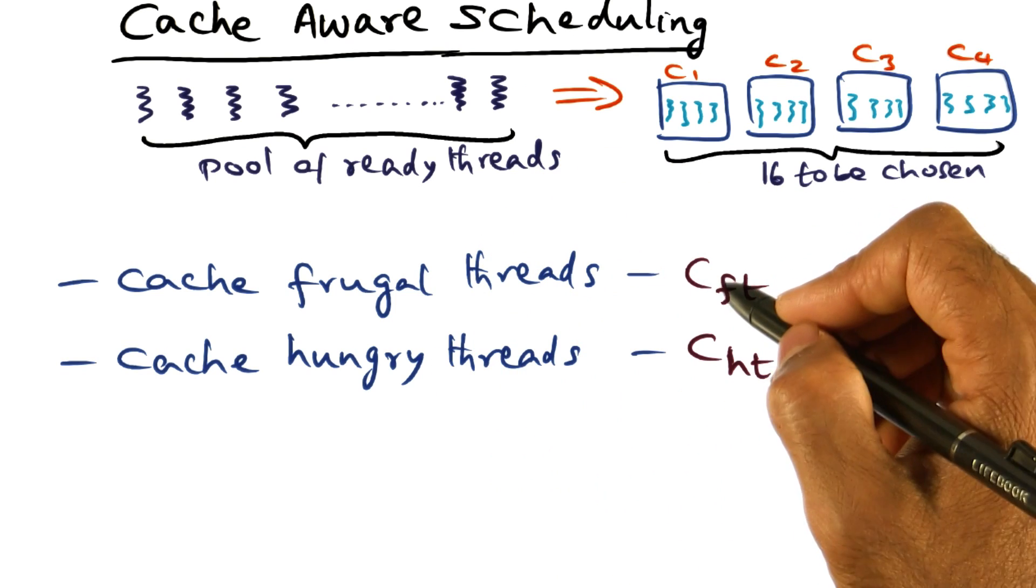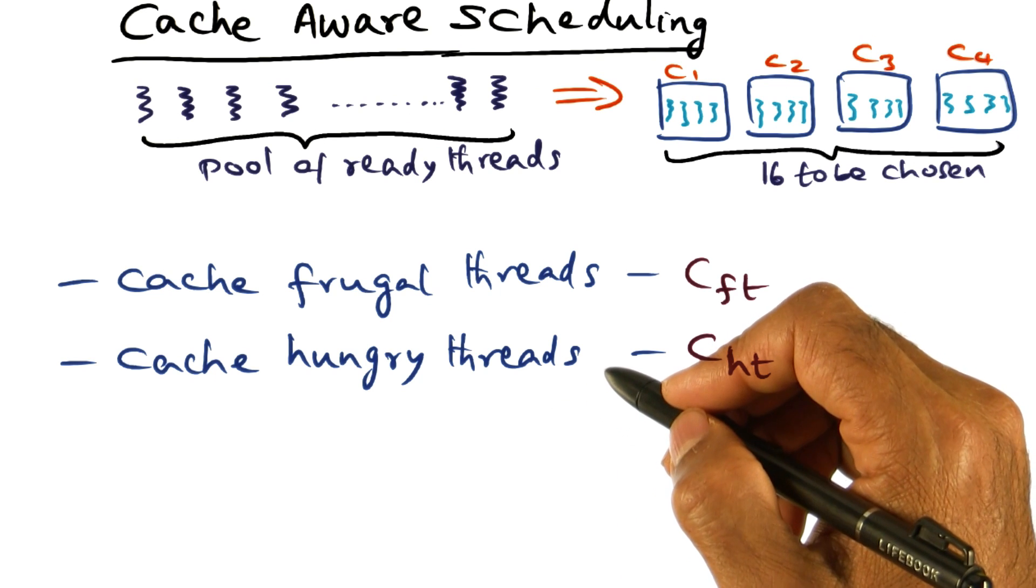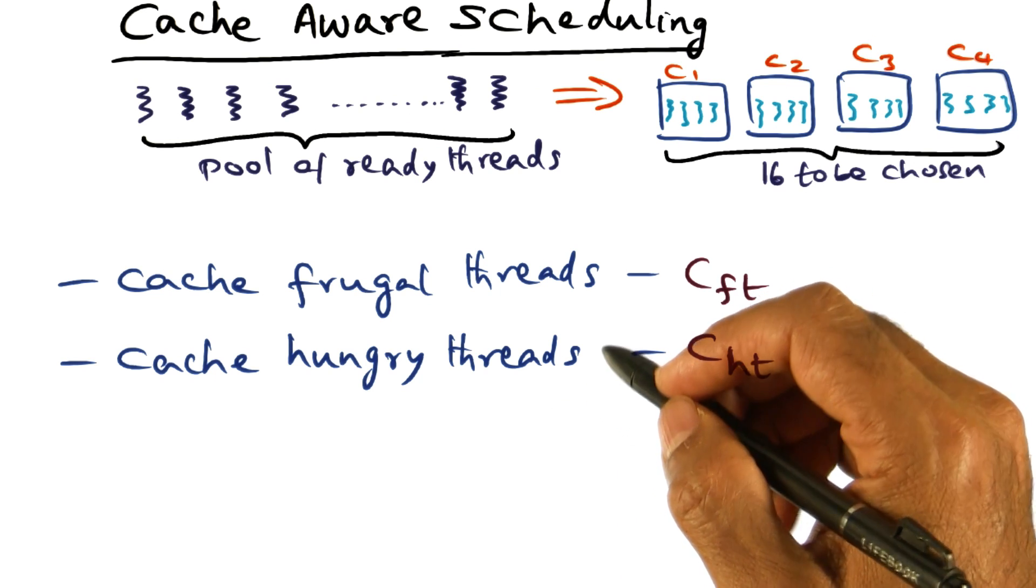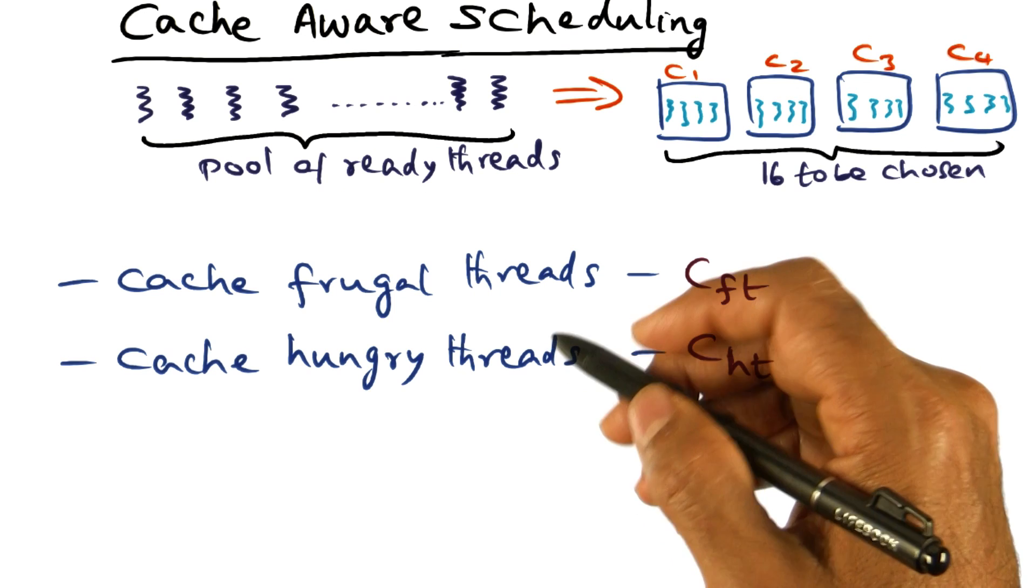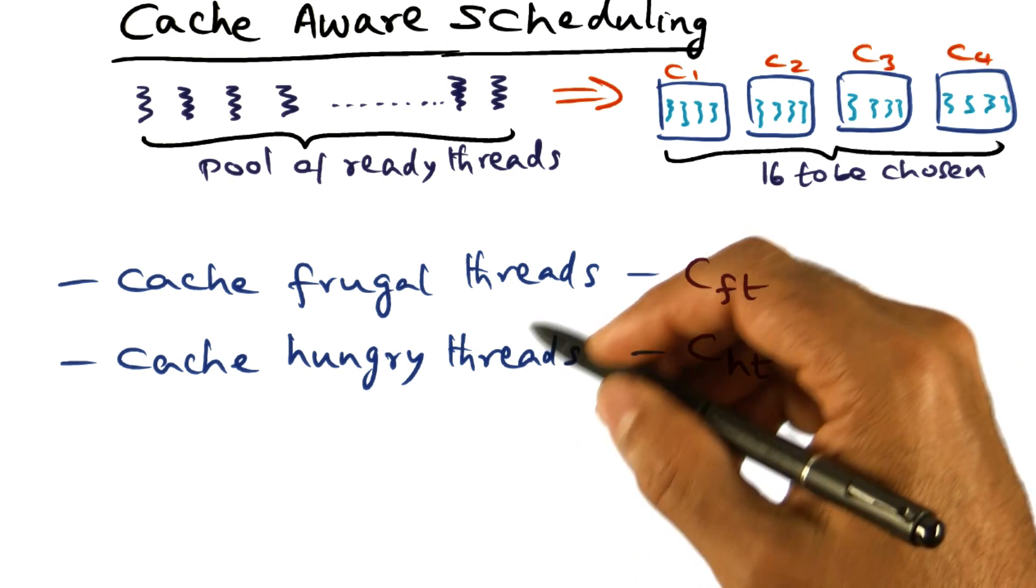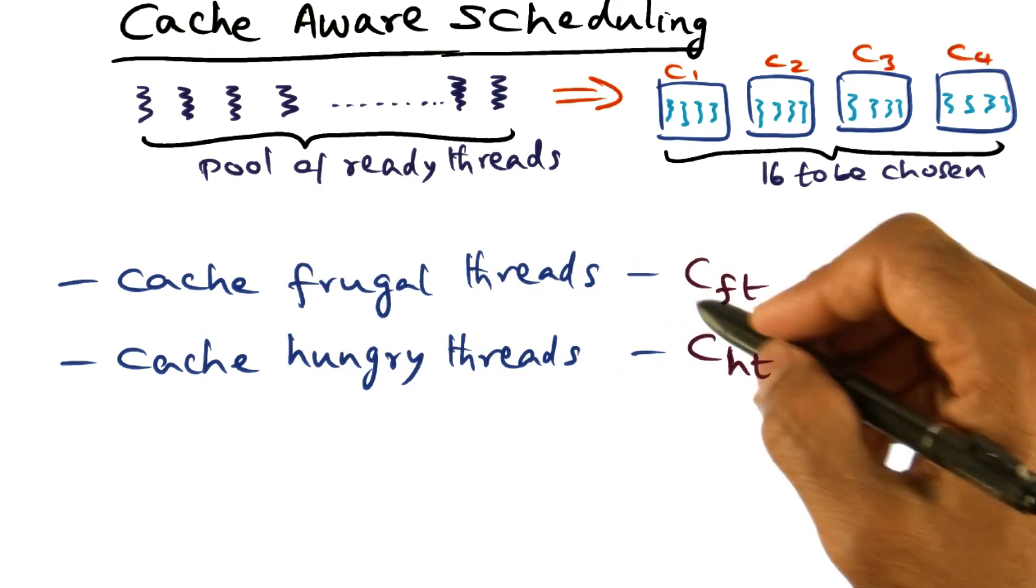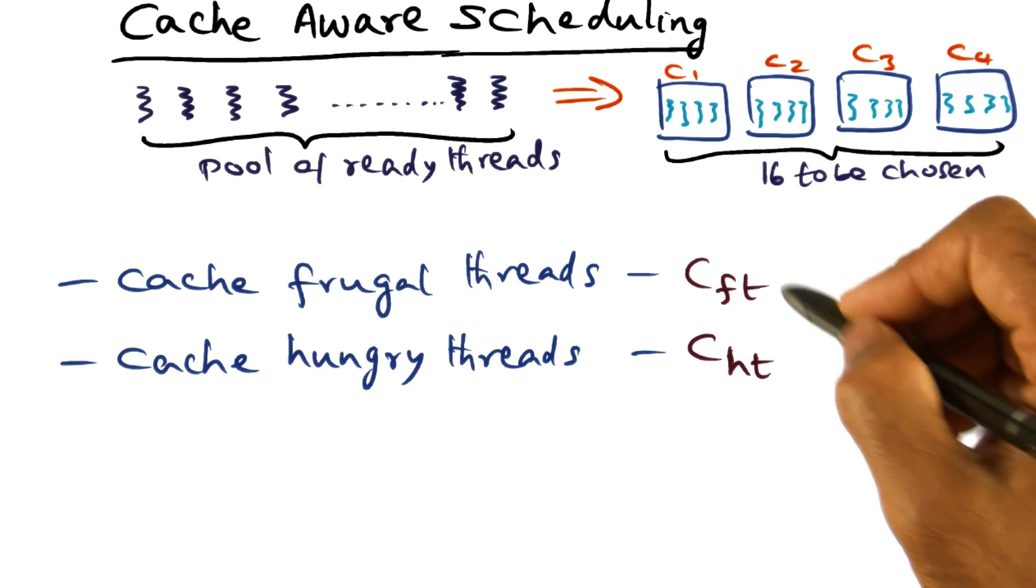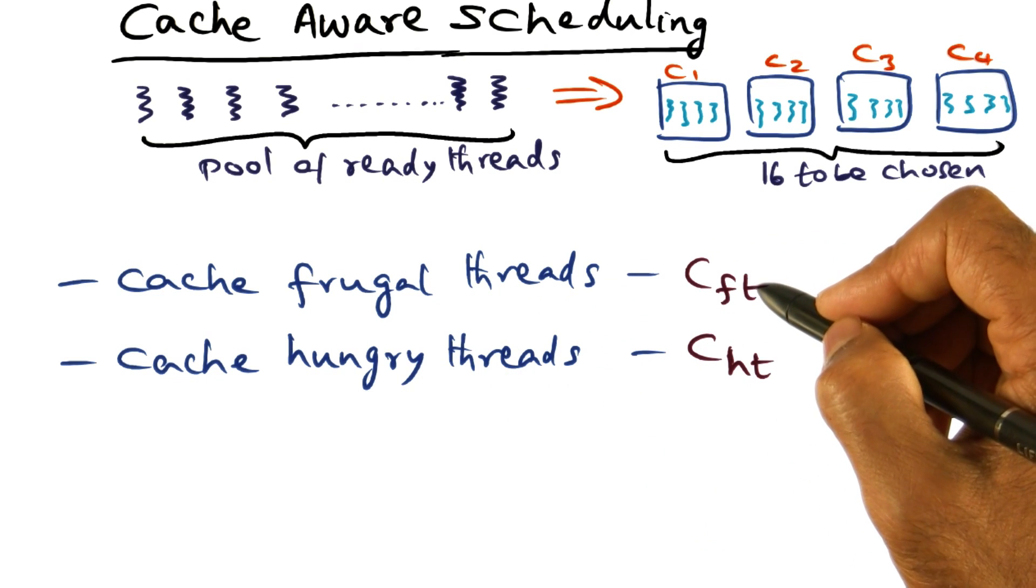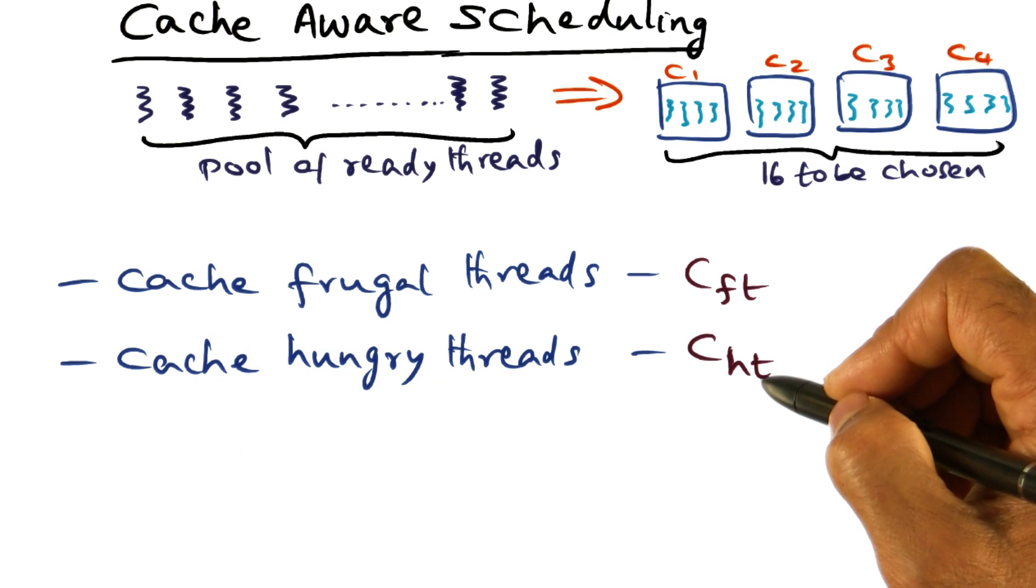Now how do we know which threads are cache-frugal and which threads are cache-hungry? Well, that's something that we can know only by profiling the execution of the threads over time. The assumption is that many of these threads get to run on the CPU over and over again. So over time, you can profile these threads and figure out whether a particular thread belongs to this category of cache-frugal thread or this category of cache-hungry thread.